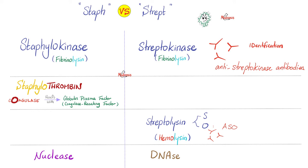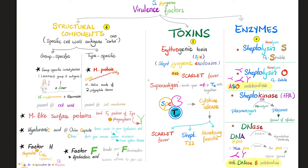Hemolysin of streptococcus is also known as streptolysin. We have streptolysin S and streptolysin O, and you will make antibodies against both. The antibodies against streptolysin O are very important — we can measure these in your blood to establish whether or not you have a streptococcal infection. Streptococcus pyogenes makes four main enzymes: streptolysin S, streptolysin O, streptokinase, and DNases. The clinically relevant antibodies are anti-streptolysin O (ASO) and anti-DNase B.